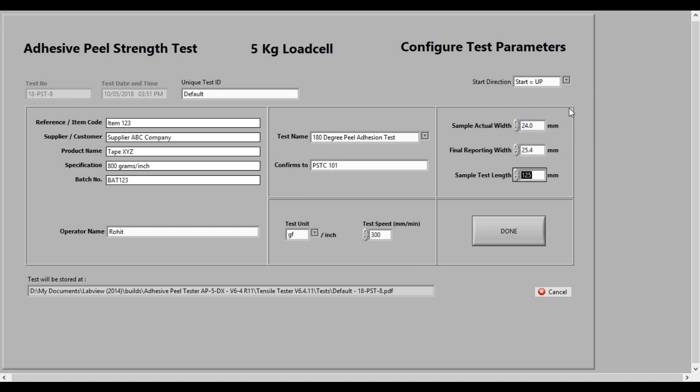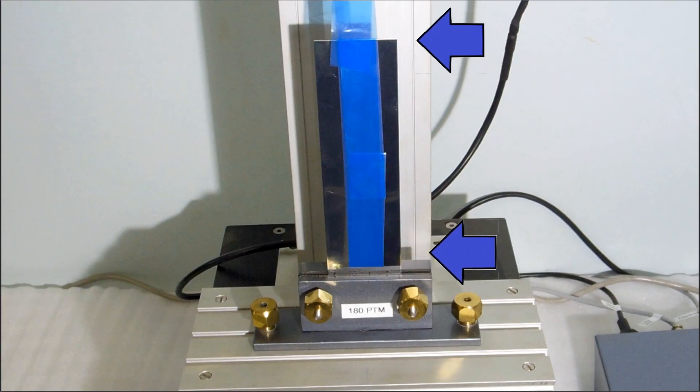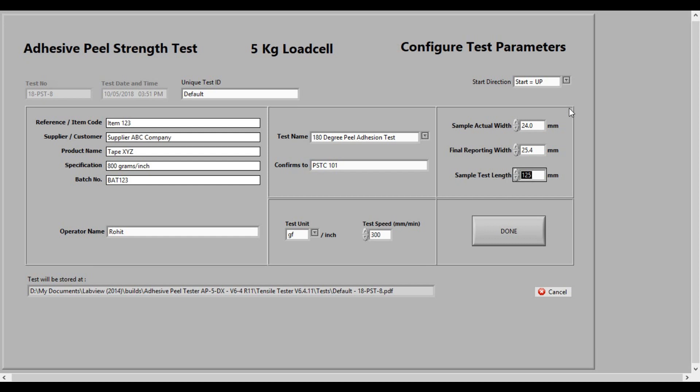The sample test length should be a little less than the real length available on the panel, minimum 75 mm. Press done and select continue.